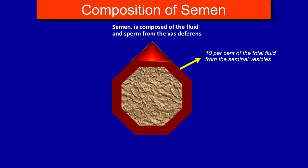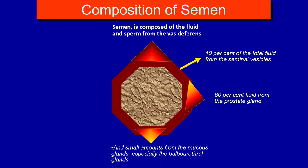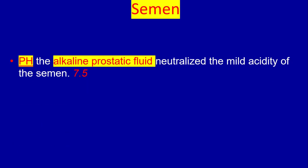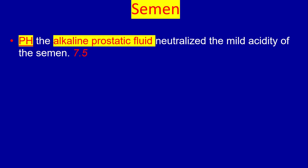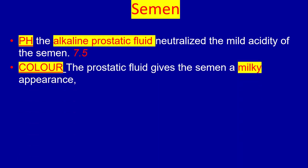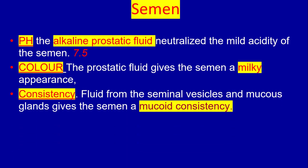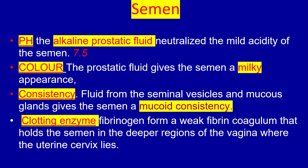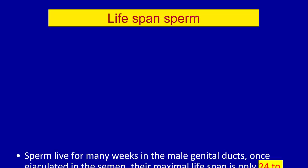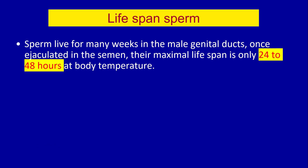Semen is composed of fluid and sperm from the vas deferens (10% of total fluid), fluid from the seminal vesicles (60%), fluid from the prostate gland, and small amounts from mucous glands, especially the bulbourethral gland. The average pH of semen is about 7.5. The alkaline prostatic fluid neutralizes the mild acidity of the other components. The prostatic fluid gives semen a milky appearance, while fluid from the seminal vesicles and mucous glands give semen a mucoid consistency. A clotting enzyme — pepsinogen — forms a weak pepsin coagulum that holds semen in the deeper region of the vagina where the uterine cervix lies.